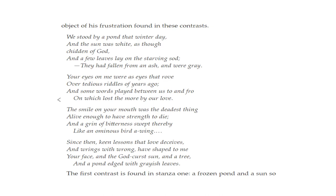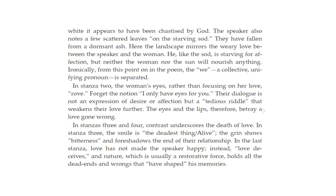They're trying to show there are many different techniques we just talked about used within these stanzas. The first contrast is found in stanza one: a frozen pond and a sun, white — appearing to be chastised or criticized by God. The speaker notes a few scattered leaves on the starving sod — the grass — fallen from a dormant ash. Here the landscape mirrors the weary love between the speaker and the woman. He, like the sod, is starving for affection, but neither the woman nor the sun will nourish anything. Ironically, from this point on, the pronoun 'we' — a collective, unifying pronoun — is separated, which is a metaphor for the man and woman's separation.